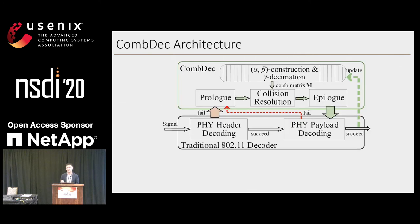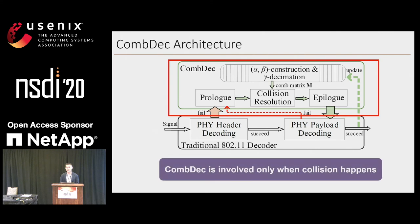This is the basic idea of our paper. Here is the architecture of CobDeck. We can see it is only triggered and only involved when a collision happens. In our system, we use alpha-bit construction and gamma-decimation to further manage our cob matrix M.